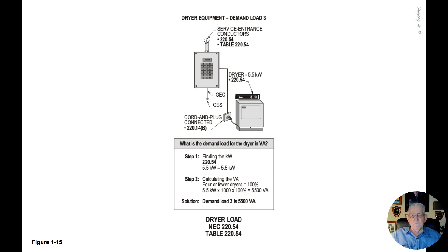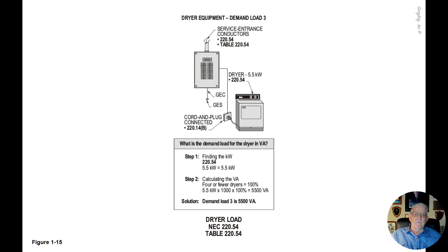Multiplying 5.5 kW by 1000 converts it to a VA rating: 5500 VA. The demand load for this single dryer is 5500 VA. To summarize, Figure 1-15 illustrates figuring the VA for four or fewer dryers calculated at 100%.